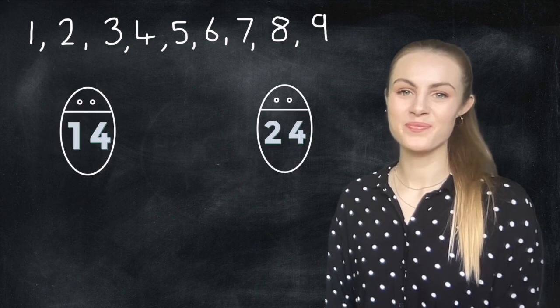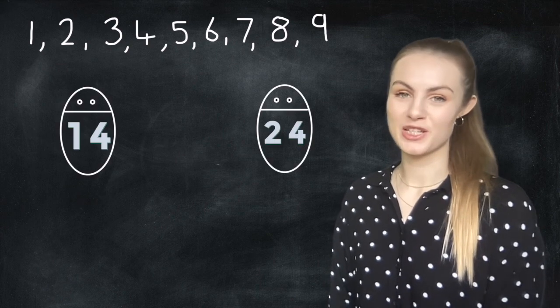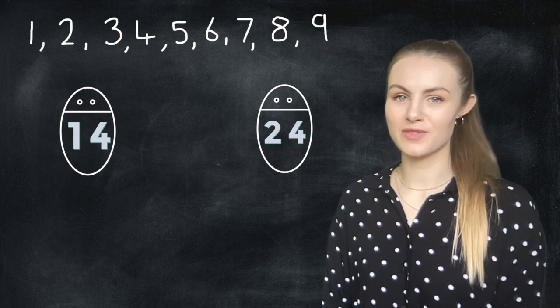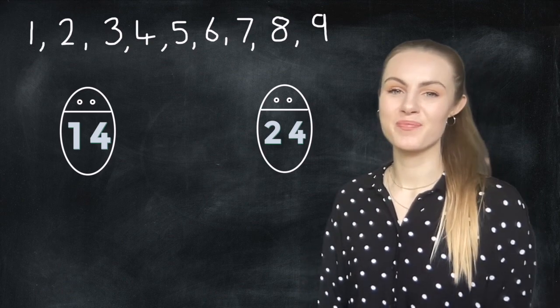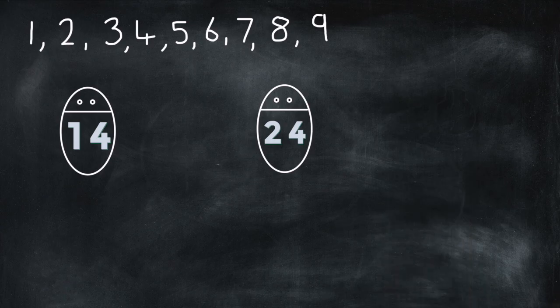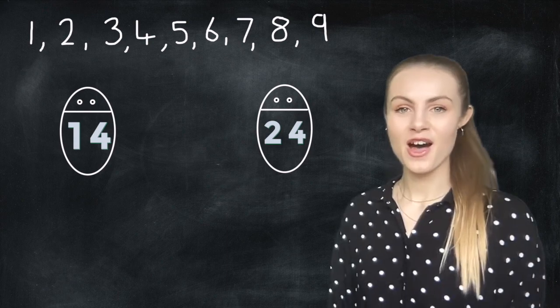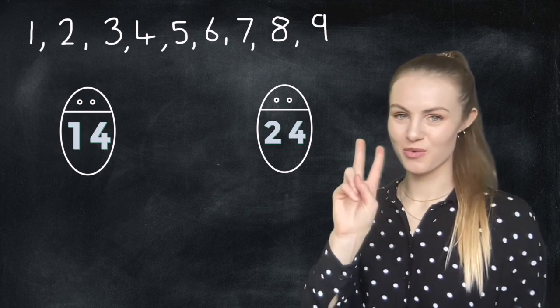Right, your turn again. Here you've got 14 and 24 and I want you to find all of the factor pairs for both of these numbers. But this time I'm not going to tell you how many there are. Pause the video now. Answers coming in 3, 2, 1.